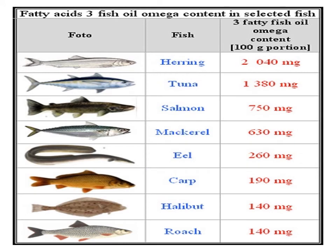Here are some selected fishes that contain high amounts of omega-3. Herring contains 2,040 mg of omega-3 fatty acids; tuna contains 1,380 mg; salmon contains 750 mg; mackerel contains 630 mg; eels contain 260 mg; carp 190 mg; halibut 140 mg; and roach contains 140 mg of omega-3 fatty acids.